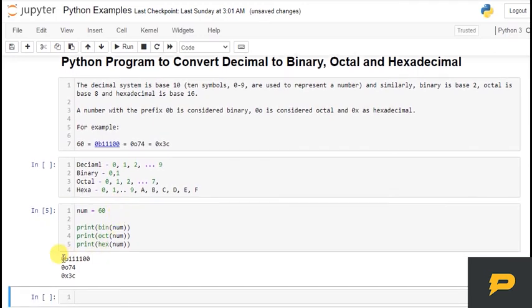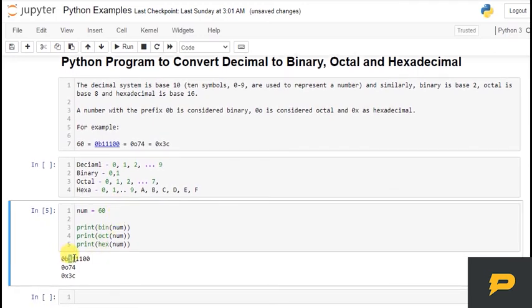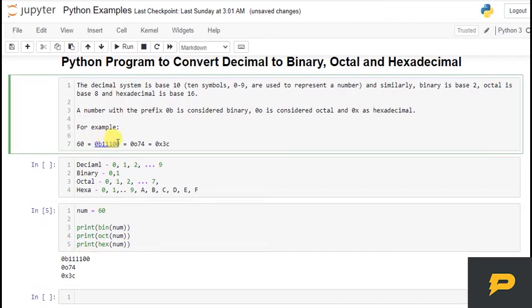There you go. We have 0b which means this is a binary number. And then we have 111100, which is same over here. I guess I just do this to 1 or more over here. Yeah, 41.